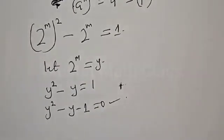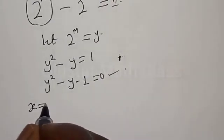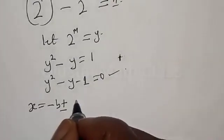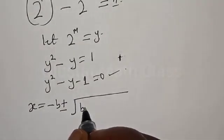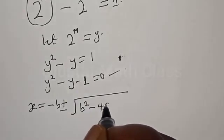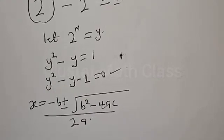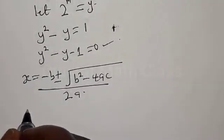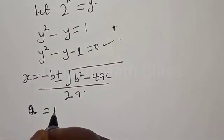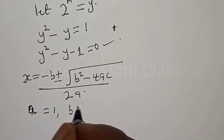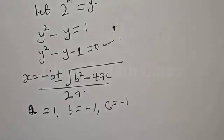Then we can solve this by using the quadratic general formula: y is equal to minus b plus or minus square root of b squared minus 4ac, over 2a. Our a equals 1, b equals minus 1, and c equals minus 1.